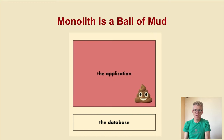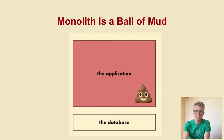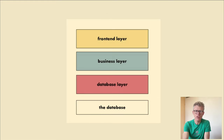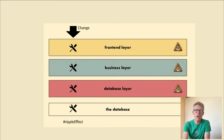A monolith is a ball of mud. That means the frontend and the backend are tightly coupled together — this is not what you want. So we split up our application into frontend, business layer, and database layer. But this also has problems: when you change something in the business layer, database layer, or frontend layer, you have to change another layer too. They call this the ripple effect.